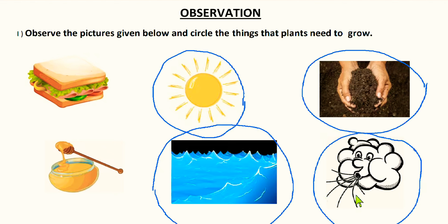Next: air. Yes, plants need air, just like us. We take in oxygen and give out carbon dioxide. In the same way, plants during respiration take in oxygen and give out carbon dioxide. And when plants prepare their own food during photosynthesis, plants take in carbon dioxide and give out oxygen. So plants need air. So, what are the needs of a plant? Sunlight, soil, water, and air.